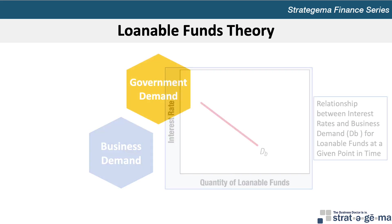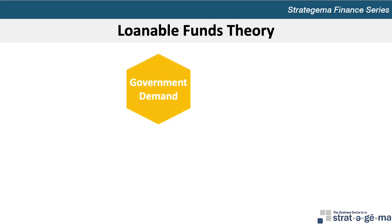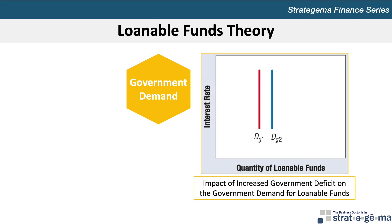Whenever a government's planned expenditures cannot be completely covered by its incoming revenues from taxes and other sources, it also demands loanable funds. Municipal governments issue municipal bonds to obtain these funds, whereas federal governments and their agencies issue treasury securities and federal agency securities — these securities constitute government debt. The federal government's expenditure and tax policies are generally thought to be independent of interest rates; thus, the federal government's demand for funds is interest inelastic, or insensitive to interest rates.